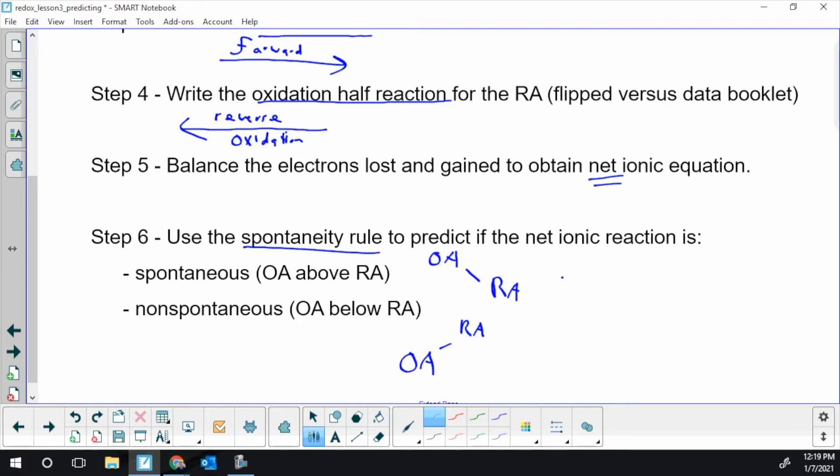For spontaneous, we often just use a regular forward arrow. For non-spontaneous, you can put an X through it as one way. The best is probably just to write spontaneous or non-spontaneous to convey to me that you understand which of the two options of step six.